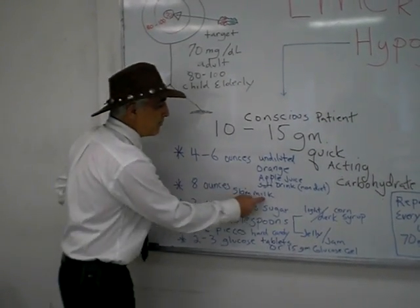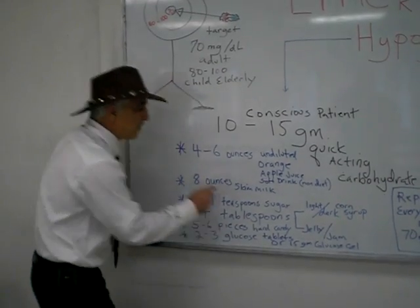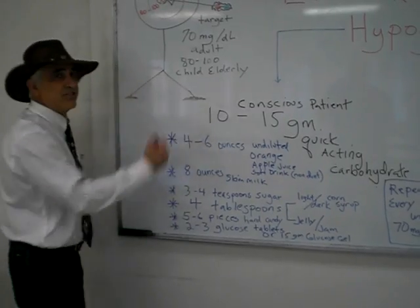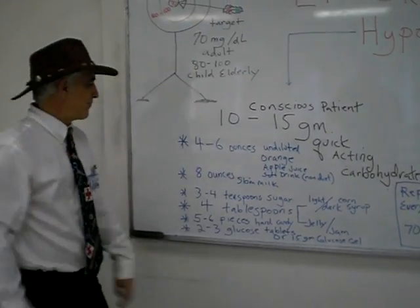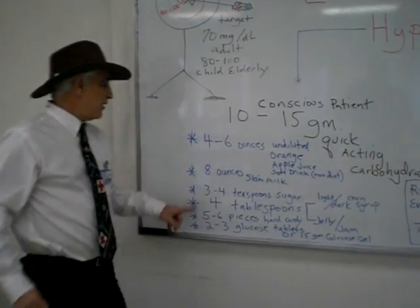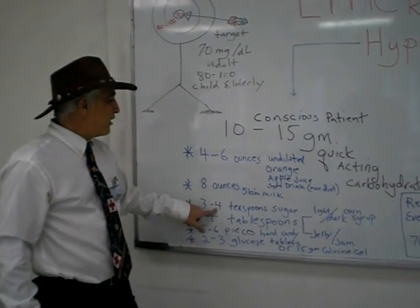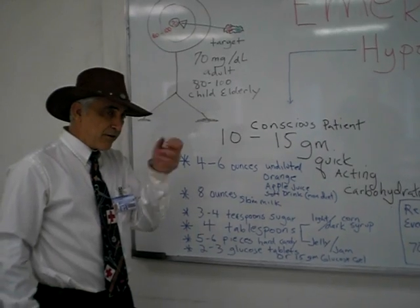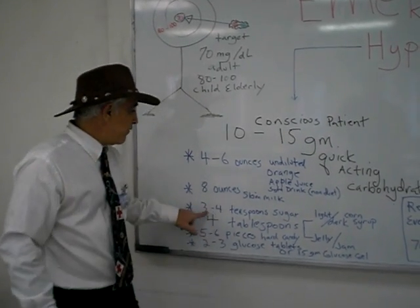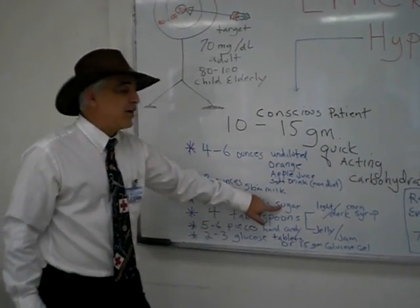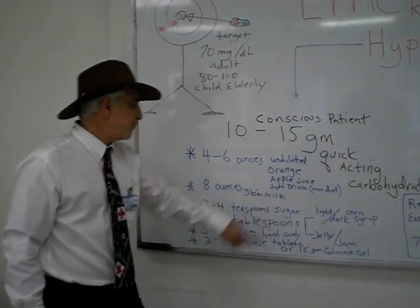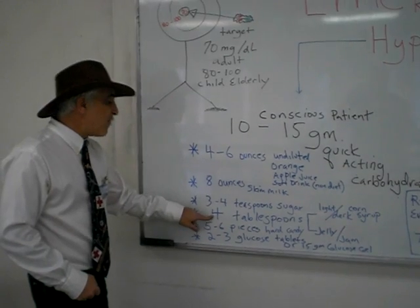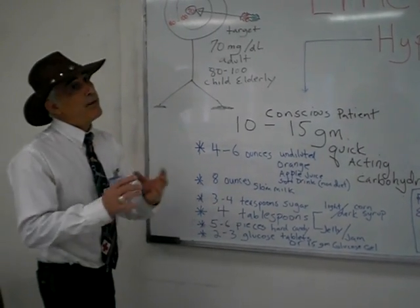Another option is eight ounces of skim milk — fat-free milk. Skim has eight letters, so eight ounces. Other options include three to four teaspoons of sugar. Remember, a teaspoon is the smaller one and equals five milliliters.